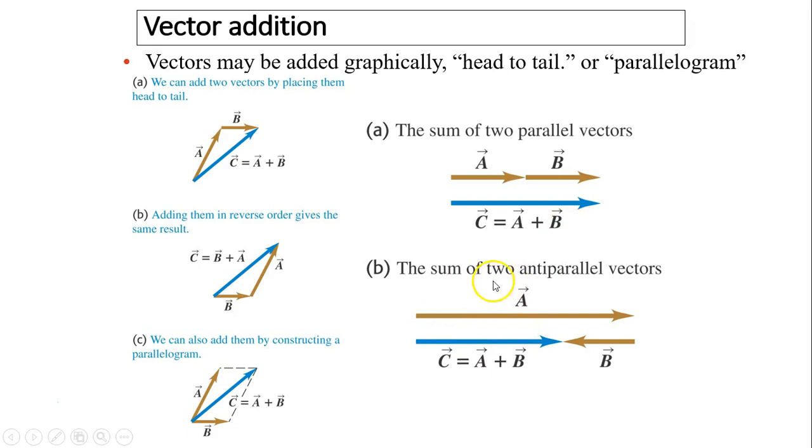The sum of two anti-parallel vectors. So here is A. Here is B. This C equals A plus B. Since B is going in the opposite direction. This would be the minimum resultant of A and B.